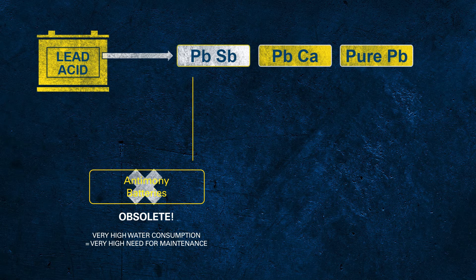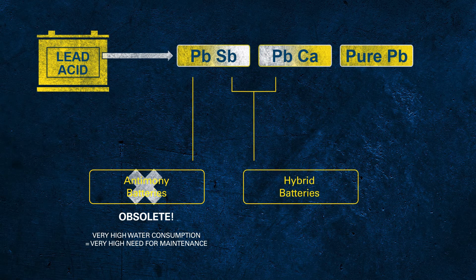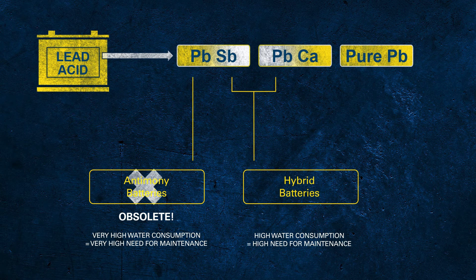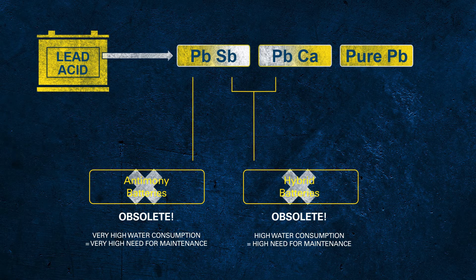The next step in development was the so-called hybrid batteries. In this case, hybrid indicates that one grid was still made of PBSB but the other was made of lead calcium alloy. Even these batteries had lower water loss compared to antimony batteries, but they still demand regular checks of the electrolyte and topping up regularly with distilled water.